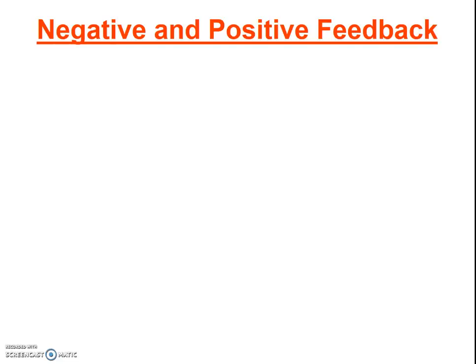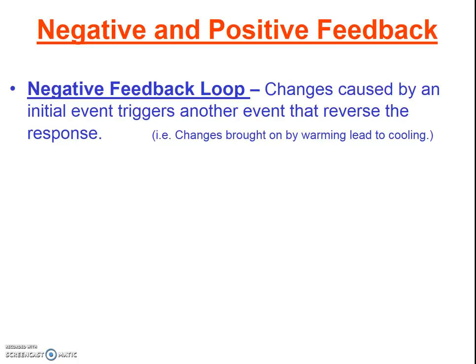We know how the greenhouse effect works to raise global temperatures. Next let's explore how feedback loops can either keep us in balance or send global temperatures skyrocketing out of control. First, negative feedback. Negative feedback keeps systems in balance. If your body gets too hot, it triggers sweating, which is evaporative cooling and which cools you down.